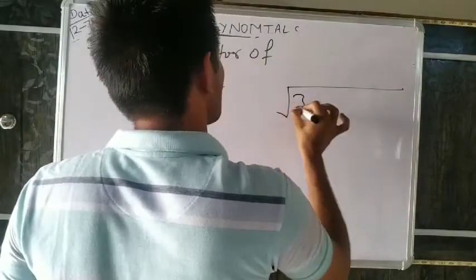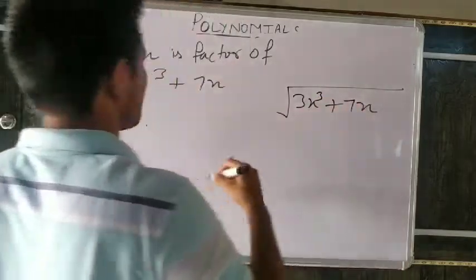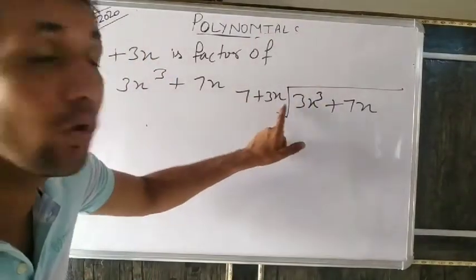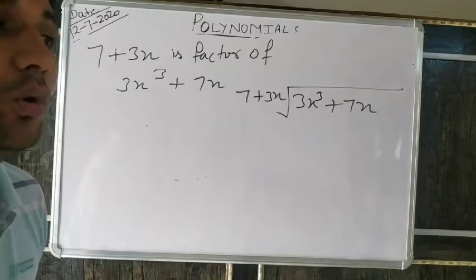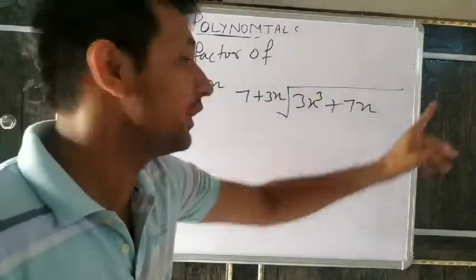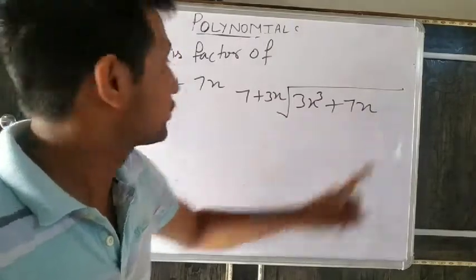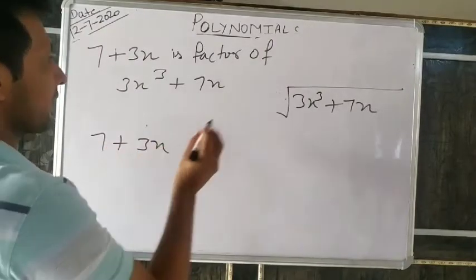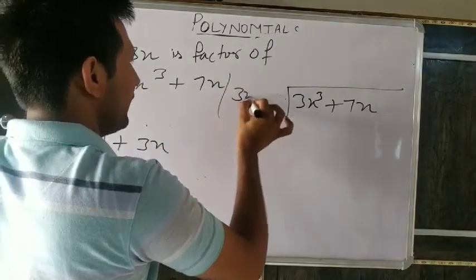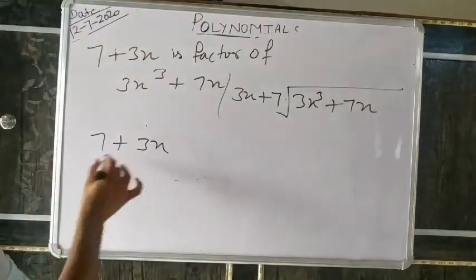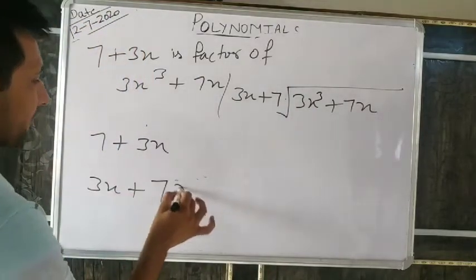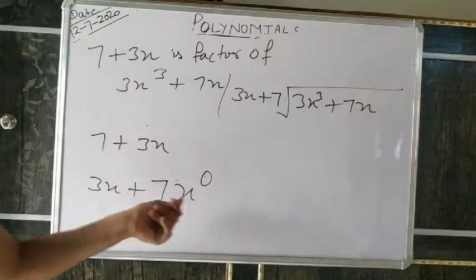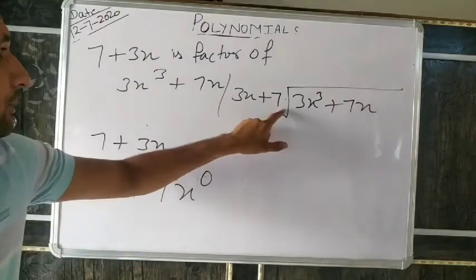We cannot write 7+3x directly as the divisor. What I told you — always write exponents in decreasing order: 3x+7 is the correct form (degree 1 before constant). Because 7+3x means 7×x⁰ + 3x, and power is in subtracting order. So write 3x+7 as the divisor. Similarly, write 3x³+7x in decreasing order: 3x³ + 0x² + 7x (no x² term, so coefficient is zero).